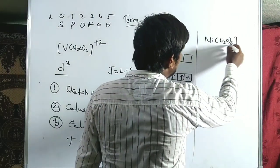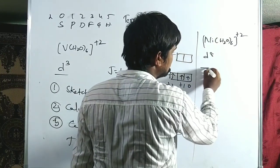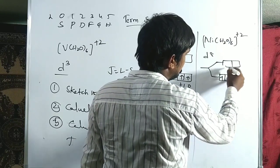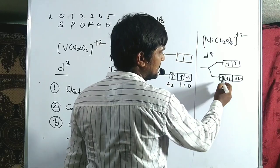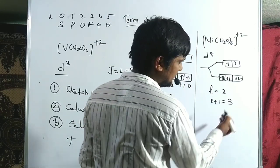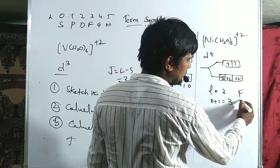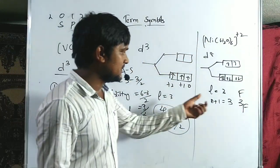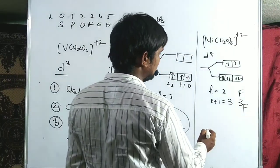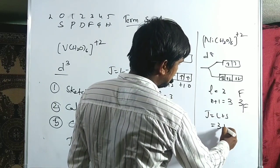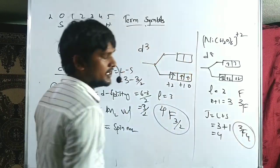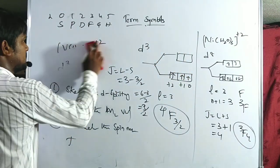For [Ni(H2O)6]2+, which is a D8 configuration: in octahedral weak field, three remaining unpaired electrons give L = 3, term F, multiplicity = 3, so 3F. More than half-filled, J = L+S = 3+1 = 4. The ground term symbol for [Ni(H2O)6]2+ is 3F4.